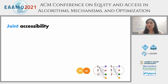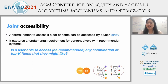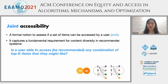How do we formulate this formally? We introduced a concept called joint accessibility. It basically means: given a set of items, can these items be jointly accessed by a user? This is trying to capture a fundamental requirement for content diversity in recommender systems. The question we are asking is: is a user able to access or be recommended any combination of top-k items that they might like? We consider that users might have diverse preferences over sets of items, and the algorithm shouldn't limit their ability to access these items if they like them.